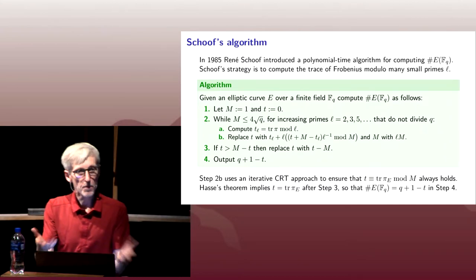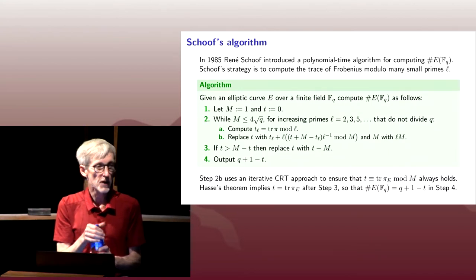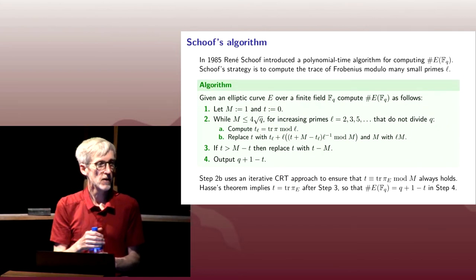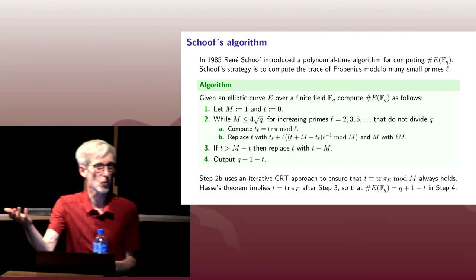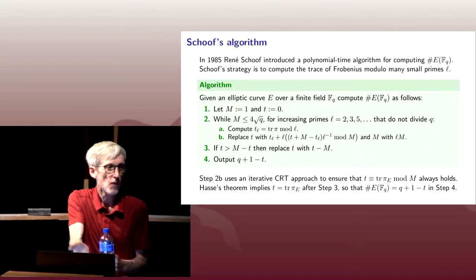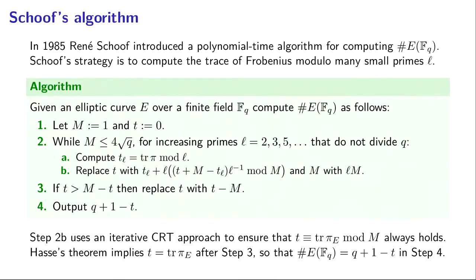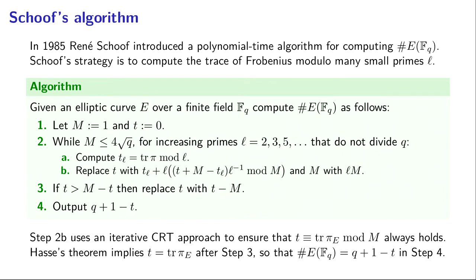So what's our strategy? We want to compute the trace of Frobenius. Schoof's idea is to compute the trace of Frobenius mod L for lots of small primes L. These will be primes L that don't divide the characteristic of whatever field we're working in. The skeleton of the algorithm: you start not knowing anything about the trace of Frobenius, but you know it's 0 mod 1. You're going to acquire additional information about the trace of Frobenius modulo more and more primes until you have enough information to know the trace of Frobenius mod some integer that's bigger than the width of the Hasse interval for square root of Q.